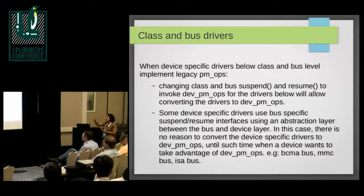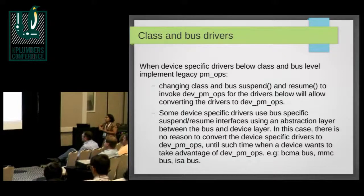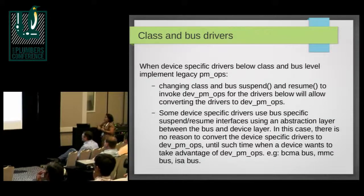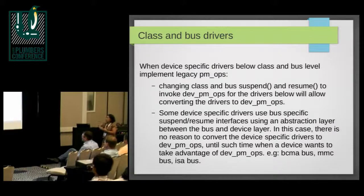When I encounter such cases, since we want to move away from legacy, I first check for the existence of dev PM. If that exists, I change the code to add a conditional to call dev PM first, and then leave the rest of the code alone — because it already has handling for legacy. You don't want to remove legacy right away, because some drivers still use it as the only thing they're implementing. In some cases they already have an abstraction layer — BCMA bus and MMC bus are good examples. In those cases you just change the class level and bus level and move on.